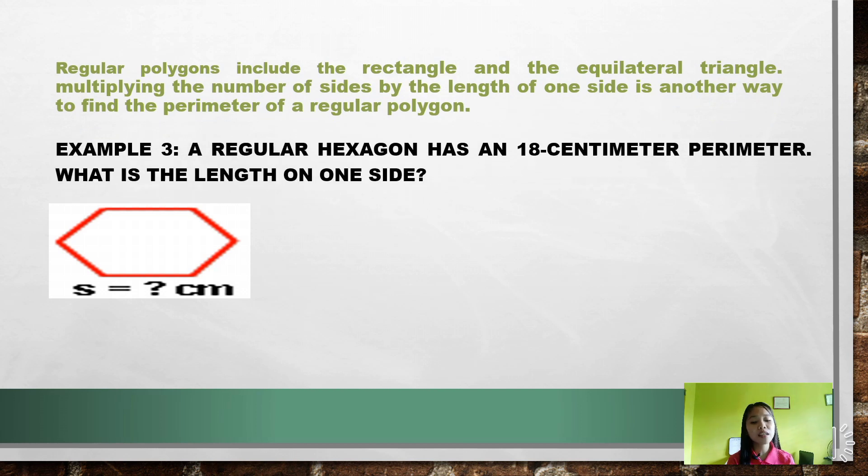We'll find the perimeter of other polygons in the following process. Regular polygons include the rectangle and the equilateral triangle. Multiplying the number of sides by the length of one side is another way to find the perimeter of a regular polygon. Let's go over our examples 3 and 4.